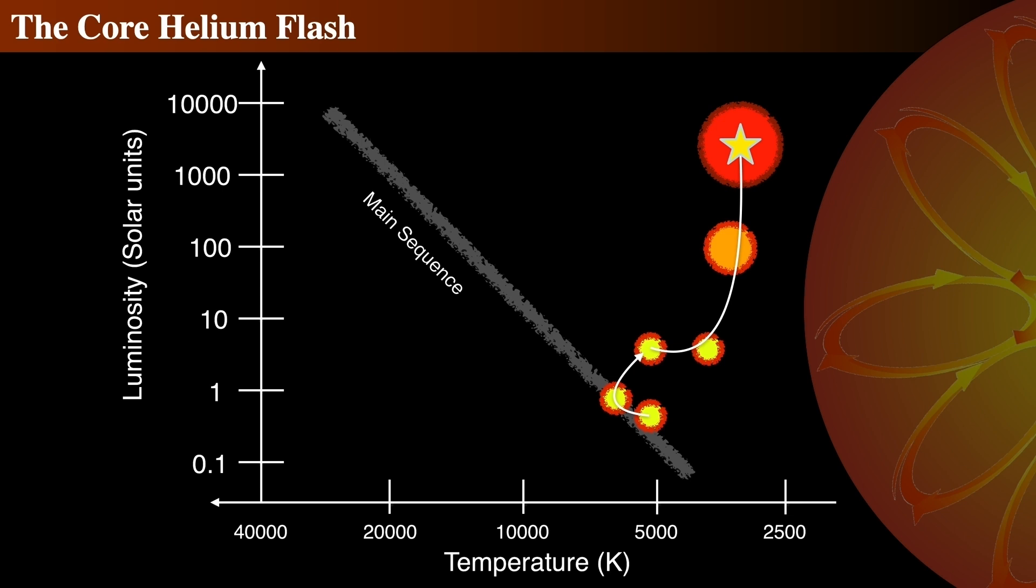The luminosity generated by the helium burning core reaches 10 to the 11th solar luminosities, comparable to that of an entire galaxy. While extreme, this tremendous energy release lasts only for a few seconds, and most of the energy never reaches the surface.